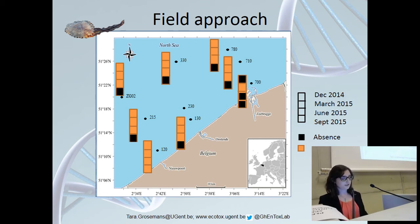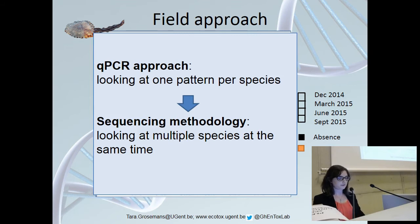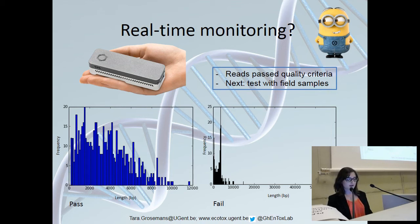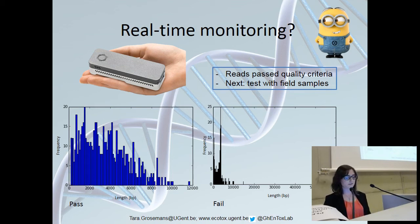To really monitor jellyfish biodiversity, we have developed a new sequencing methodology that has the potential to be applied in the field. For this methodology, we are using a new sequencing platform called the MINION. The MINION is a nanopore pocket-sized sequencer that uses real-time sequencing, so you can look into your data the moment it starts sequencing. This monitoring device has also been used to monitor disease outbreaks like Zika or Ebola, and it is even the first sequencer going into space.